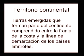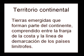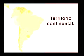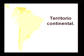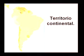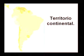Comenzamos con el territorio continental: son todas aquellas tierras emergidas que forman parte del continente, comprendido entre la franja de la costa y la línea de demarcación de los países limítrofes. Recuerda la actividad donde señalábamos la superficie del territorio continental, refiriéndonos a toda aquella porción de Venezuela que está dentro del continente. En el mapa de América del Sur puedes ver la porción del territorio continental de Venezuela, las tierras dentro del continente. De allí su nombre: territorio continental.